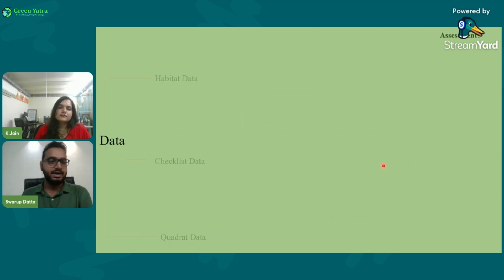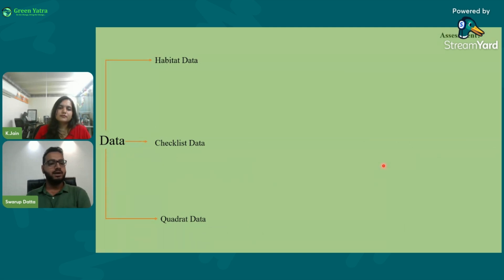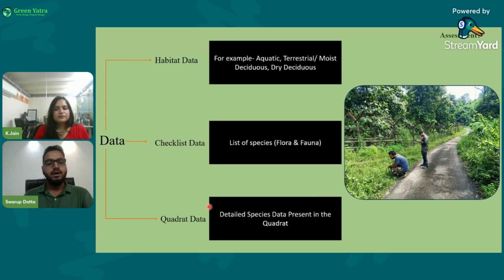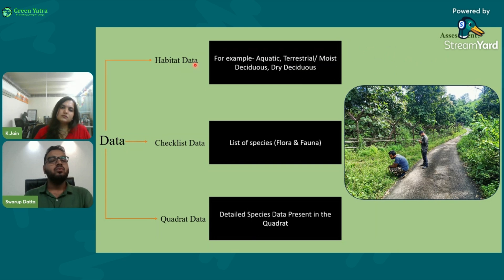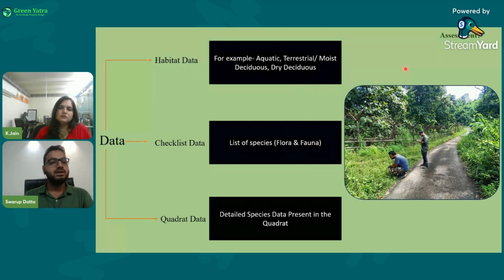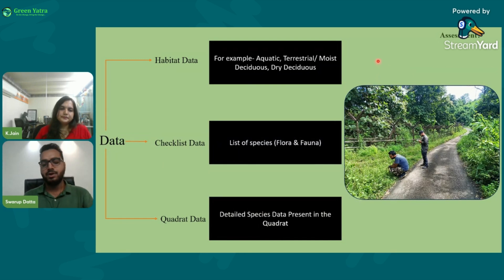There are three types of data to collect: habitat data, checklist data, and quadrat data. Quadrat data is collected at specific quadrat sites — mostly used for flora. Checklist data is a list of all flora and fauna present in the study area, including their conservation status (e.g., whether a species is endangered). Habitat data is also essential because different habitats — aquatic, terrestrial, moist deciduous, or dry deciduous — may be present in the study area, and understanding them allows proper data analysis.